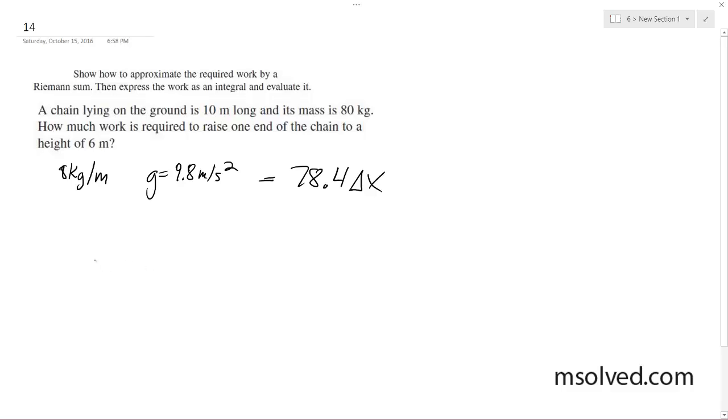Alright, so integrating this, we need to move it 6 meters, so 0 to 6, we end up with 78.4 x dx. Factor out our constant, 0 to 6, x dx.